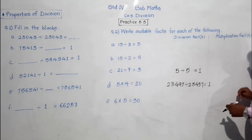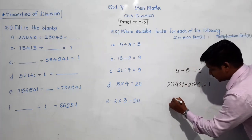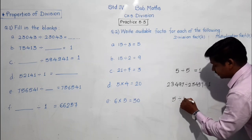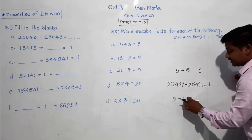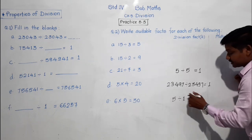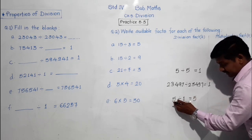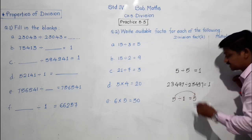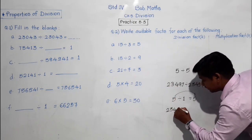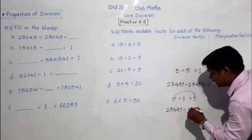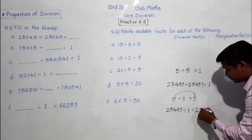Another pattern: if 5 is divided by 1 — 5 divided by 1 — what is the answer? The answer is 5. This means if we divide any number by 1, the answer is that number itself. For example, 23,497 divided by 1 — what will be my answer? This number itself: 23,497 only.